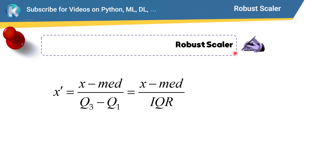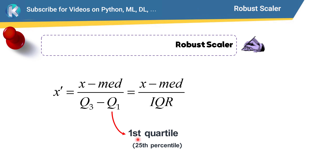Here is the formula for the robust scaler. Every data point in that column is subtracted by the median of that column, then divided by Q3 minus Q1 of that column. Q1 is the first quartile, which is equivalent to the 25th percentile, and Q3 is the third quartile, which is equivalent to the 75th percentile.